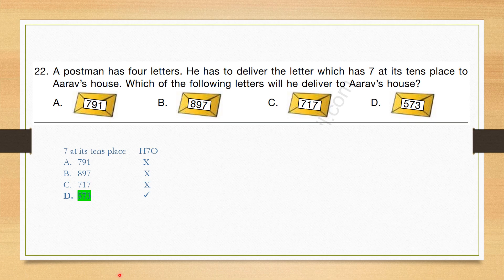Question number 22: A postman has 4 letters. He has to deliver the letter which has 7 at its 10s place to the RF's house. We need the letter with 7 at the 10s place. Option A has 9 at 10s place; option B has 9; option C has 1; option D has 7 at the 10s place. Correct answer is option D.